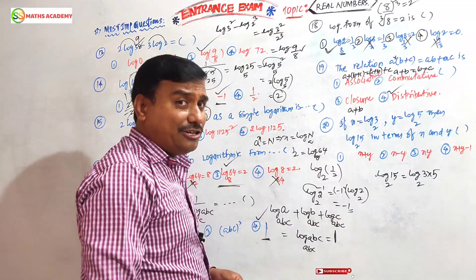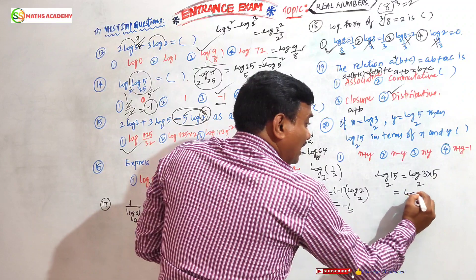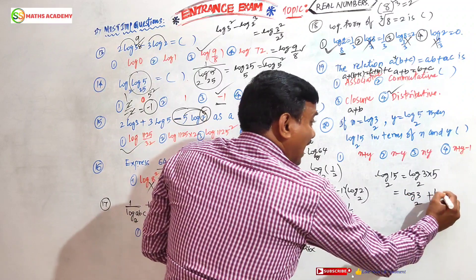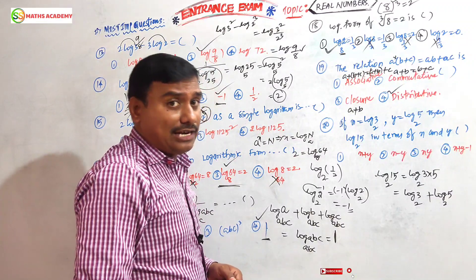15 can be written as 3×5. Now log(a×b) we can write as log(a) + log(b). Log(a) means log₂(3), log(b) means log₂(5).